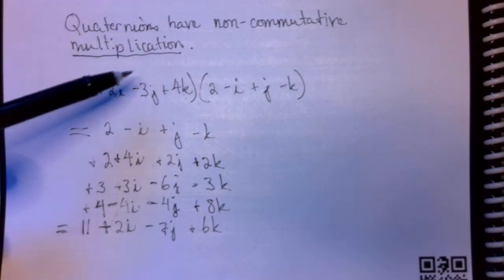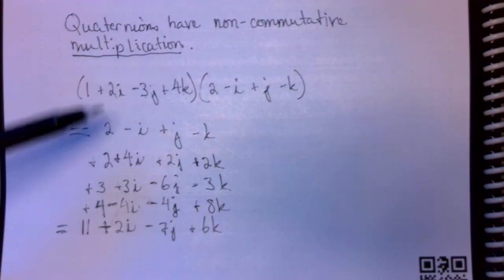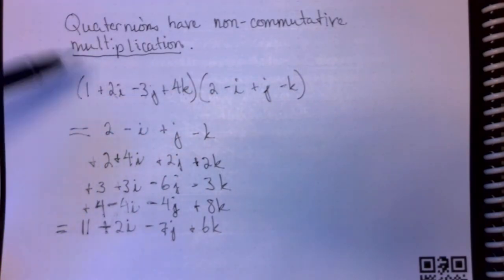So, that is the product of these two quaternions. And if we switch the order, we would get a different result. So, we've got to be very careful with the order of multiplication. Quaternions give us a non-commutative multiplication.